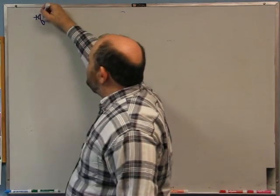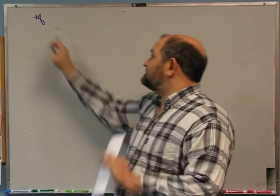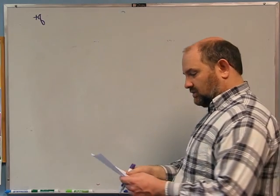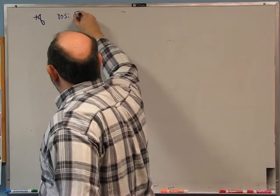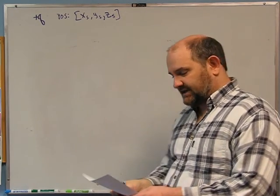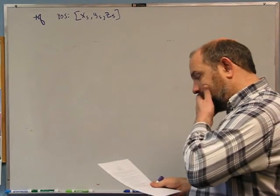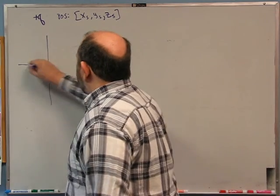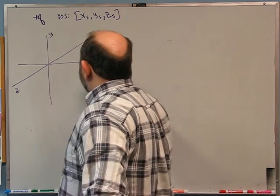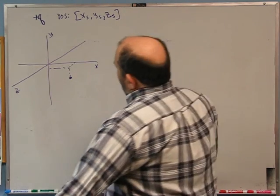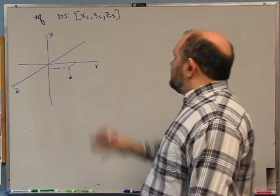Second problem: a particle with charge plus q — implying q is positive — is at position (xs, ys, zs). There are no other charges anywhere. What is the electric field everywhere in space, except at the position of the charge? When you don't have numbers, pick an arbitrary position. I'll say the charge is at some point with positive x and z and negative y. The electric field everywhere in space points away from this charge and gets smaller with distance.